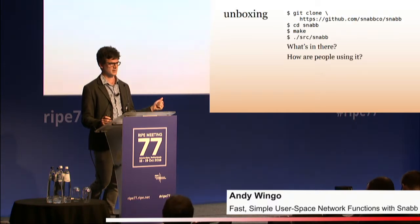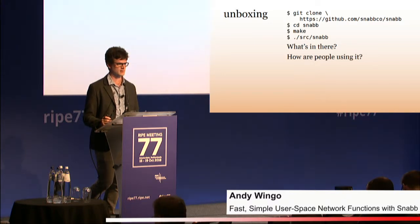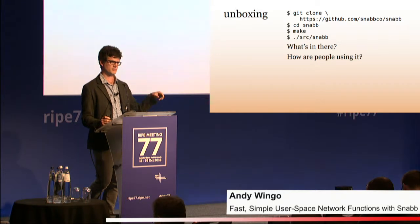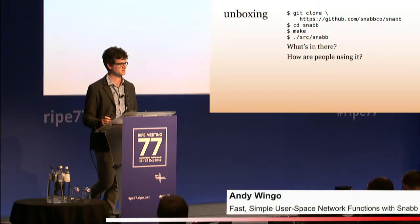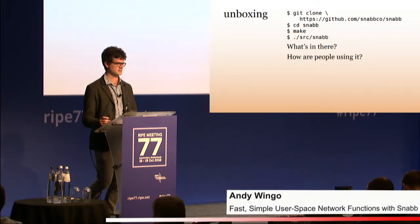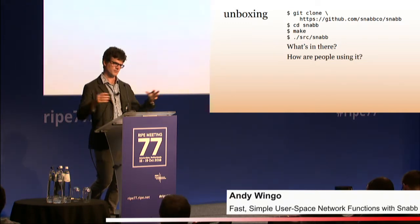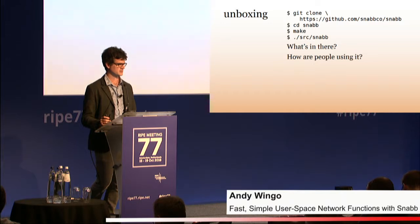To check out Snab, you just clone the Git repository and make — it builds in about a minute. In the early days, we had a code budget where the whole thing had to build in under a minute including the LuaJIT dependency. We also had a budget of 10,000 lines of code, which forced us to make smaller solutions. Now that we're seeing more production use cases, we've gotten a bit more horizontal expansion.